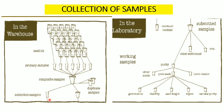The submitted sample is further reduced in the laboratory into a smaller size sample called working samples, from which we divide the sample into several components: pure seed, other seed components, and inert matter.